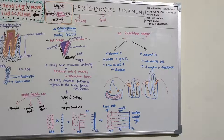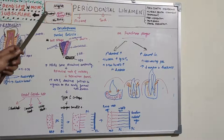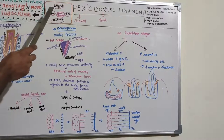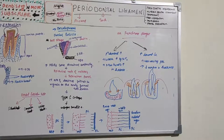Hello everyone, welcome back to another session in dentistry and more. Today's topic is periodontal ligament, one of the four components of periodontium — the structure which supports the tooth. Periodontium includes two hard tissues (cementum and alveolar bone) and two soft tissues (gingiva and periodontal ligament). We have already covered gingiva, so today's session is about periodontal ligament.